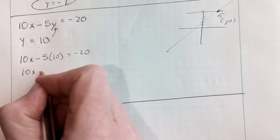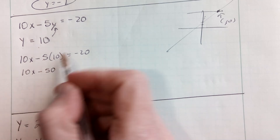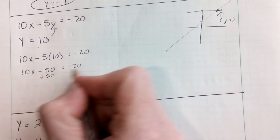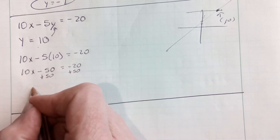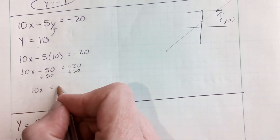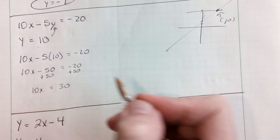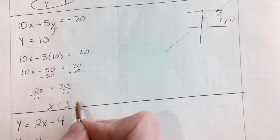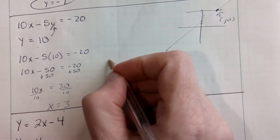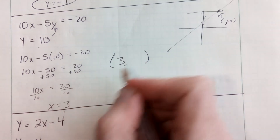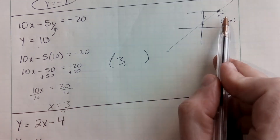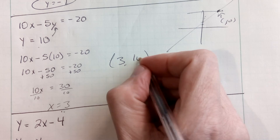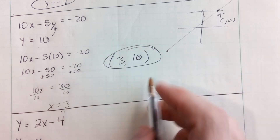So I'm going to rewrite that first equation: 10x minus 5, but now instead of y I'm replacing it with what that second equation told me y was, which is 10, negative 20. Now I solve for x. 10x minus 50 equals negative 20. I add 50 to both sides, so I get 10x equals positive 30. Then I divide by 10, and I get x is 3. That's the x value of where those two lines intersect, so I also include the y value of 10. My solution is the point (3, 10).